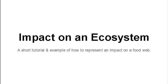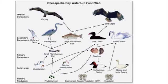To complete the Unit 4 Interactive Poster Project, you need to demonstrate your understanding of what would happen in a food web if a species was added or removed from that food web. This tutorial is to give you an example of one way to do that.